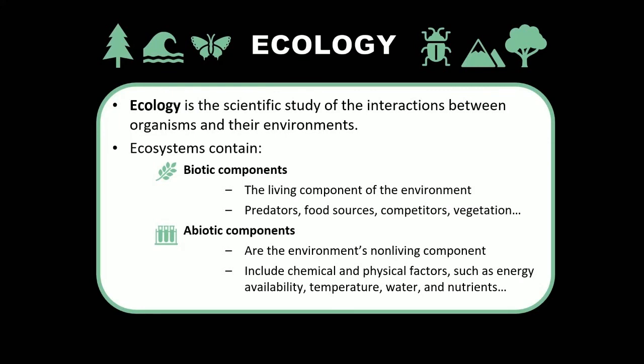Abiotic components are the non-living portions of an ecosystem. They include things like temperature — how cold or warm it gets in an area — how much water is available, what the rainfall and precipitation pattern is like, and what kinds of nutrients are available in the soil, whether it's a nutrient-rich or nutrient-poor area. These are the non-living, abiotic components of the environment.